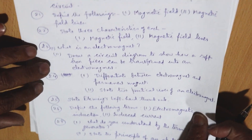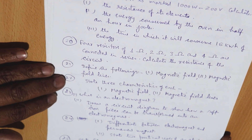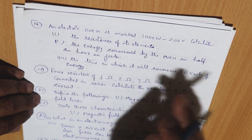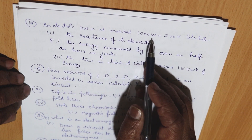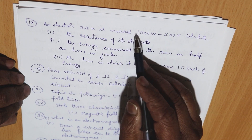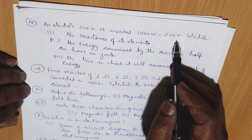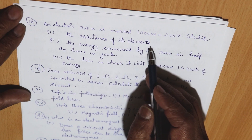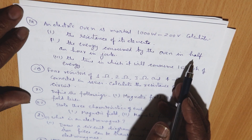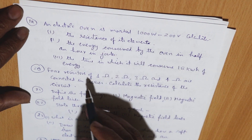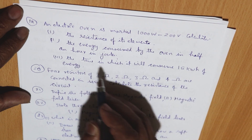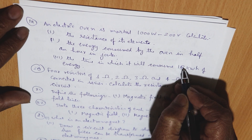An electric oven is marked 1000 watt and 200 volt. Calculate the resistance of the element of the electric oven, the energy consumed by the oven in half an hour in joules, and the time in which it will consume 15 kilowatt-hours of energy.